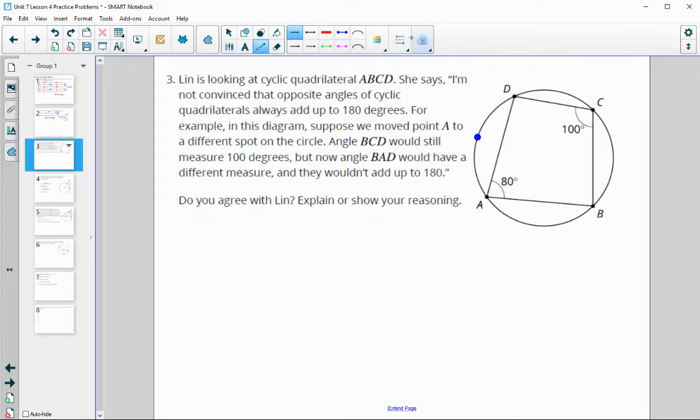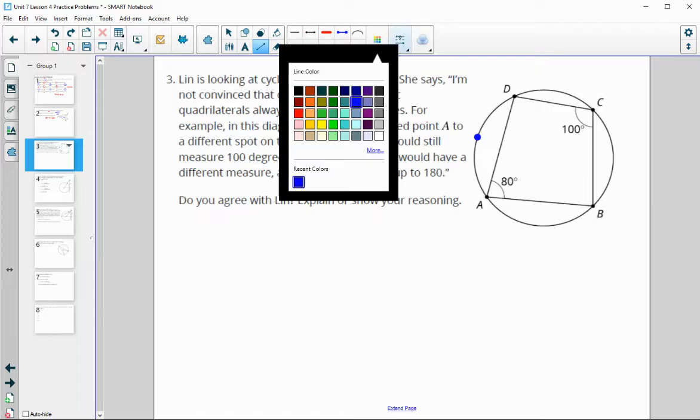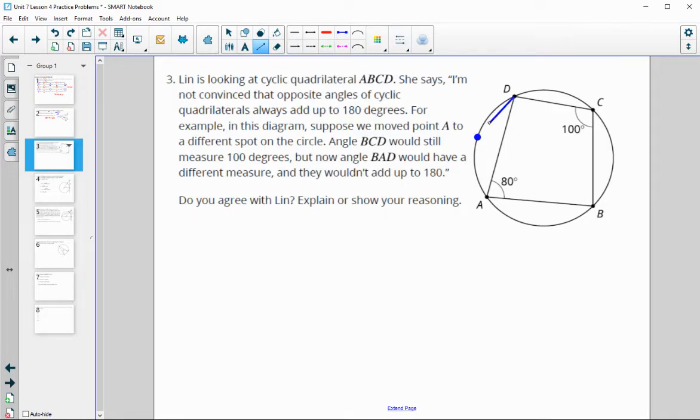So if we move point A over here, then we could connect the other part of the quadrilateral. So now it would be like this. And the intercepted arc hasn't changed. So it still goes from D all the way over to B.